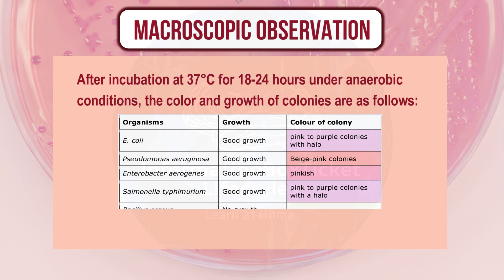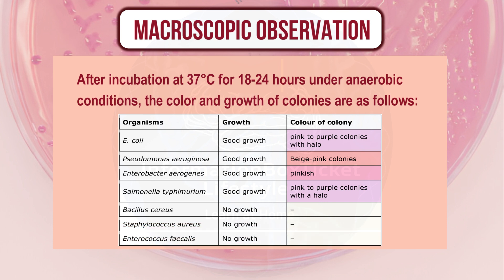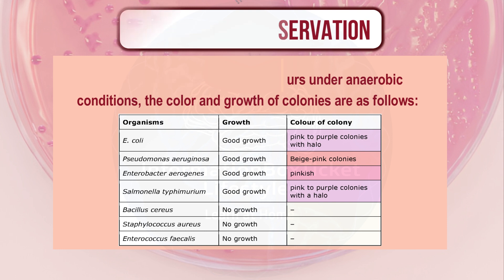In contrast, Bacillus cereus, Staphylococcus aureus, and Enterococcus faecalis showed no growth on the plates. These observations highlight the selective nature of the agar and the distinct colony characteristics of different bacterial species under anaerobic incubation conditions at 37°C.